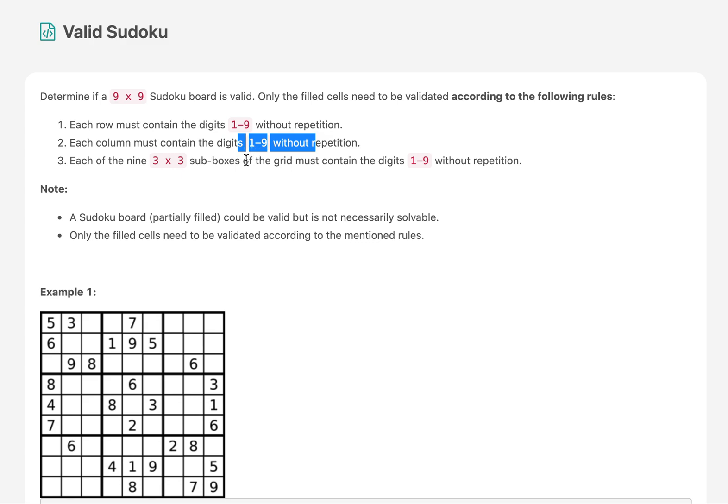Each of the 3x3 sub-boxes of the grid must contain the digits 1 to 9 without repetition.